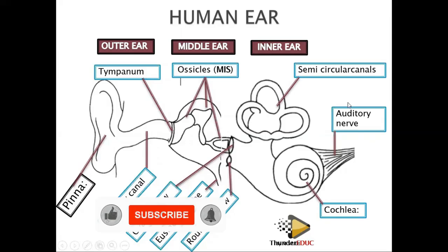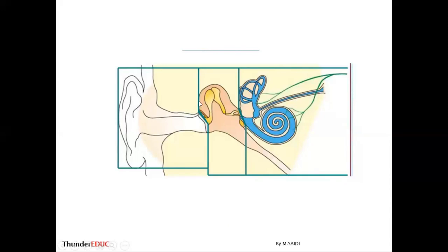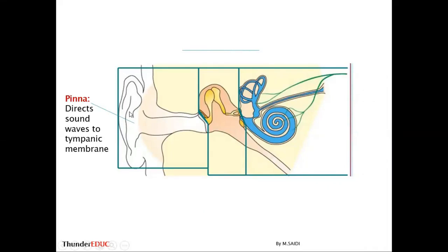We need to know the function of each part so that we can understand the functioning of the ear. The pinna, which is the outside part of the ear, collects and directs sound waves to the tympanic membrane. It has curves so that it can collect sound from any direction and sends it to the tympanic membrane via the auditory canal. The auditory canal transmits sound waves to the tympanic membrane.